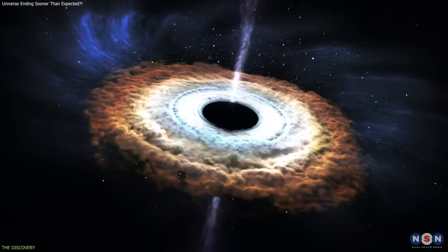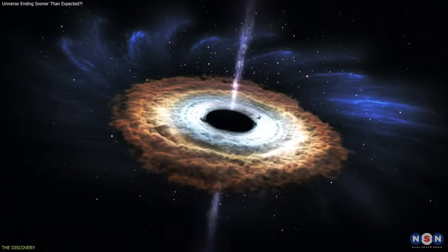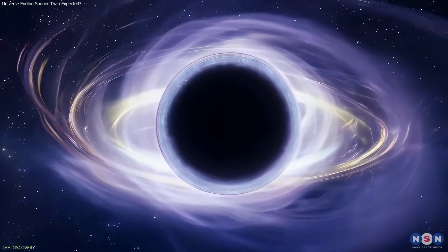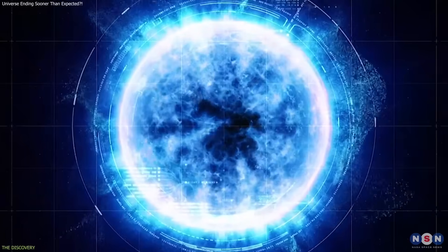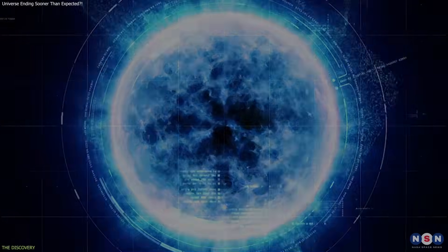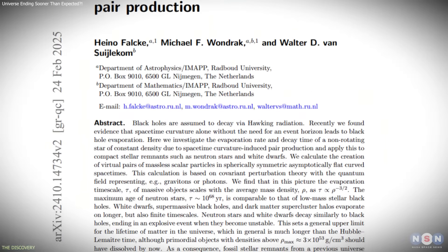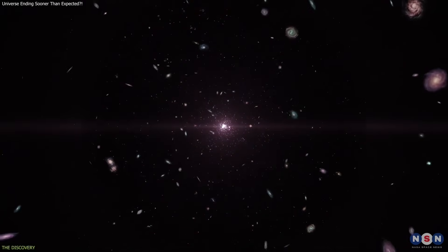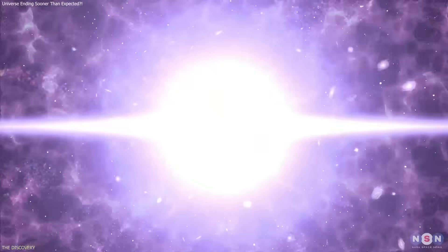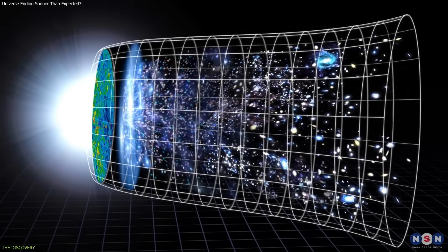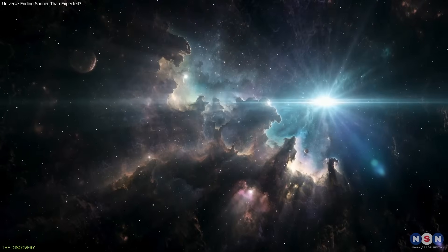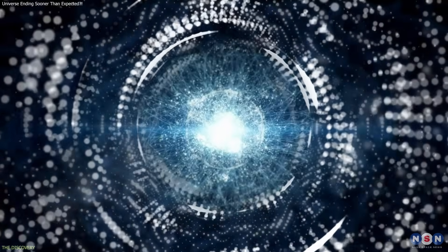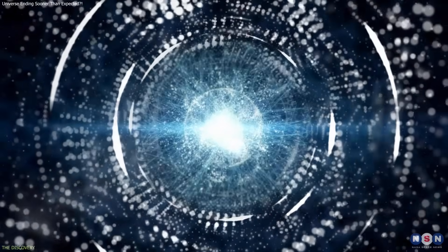Using these emission rates, the researchers calculated evaporation times. Neutron stars and stellar-mass black holes fall within similar timescales. White dwarfs, being less dense, last longer, but not indefinitely. The upper limit for any compact remnant is roughly 10 to the 78th power years, a large number, but dramatically shorter than previous estimates that place the universe's end many orders of magnitude further into the future. This discovery implies that the final era of the cosmos begins earlier than expected, driven by the silent but persistent effects of quantum physics in curved spacetime.